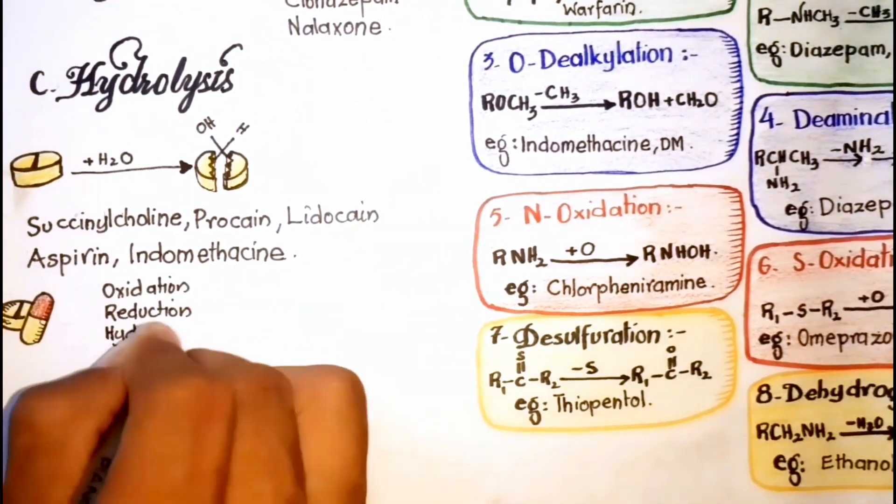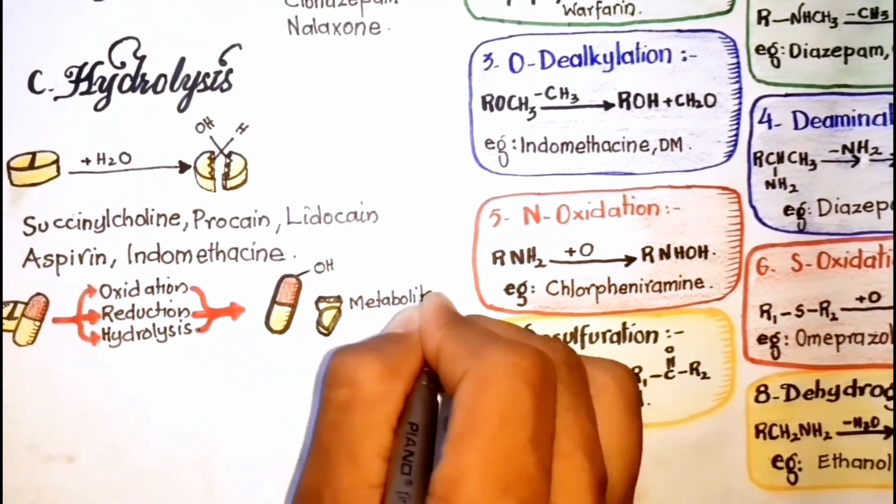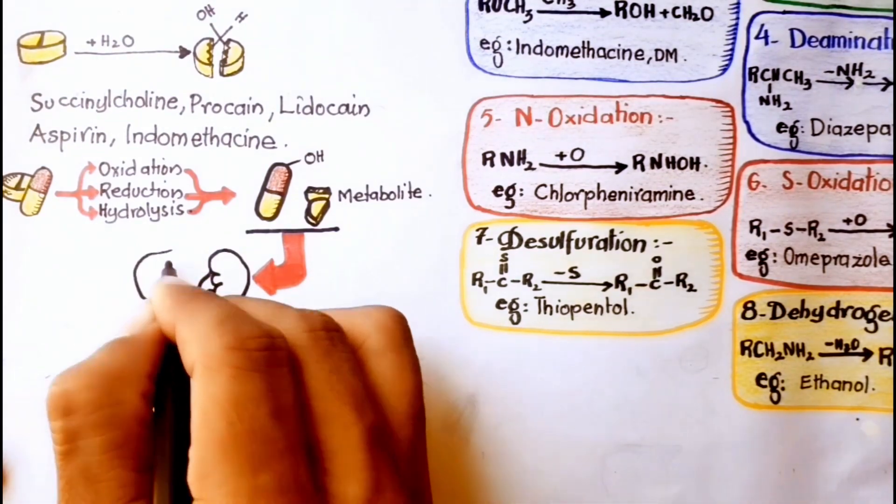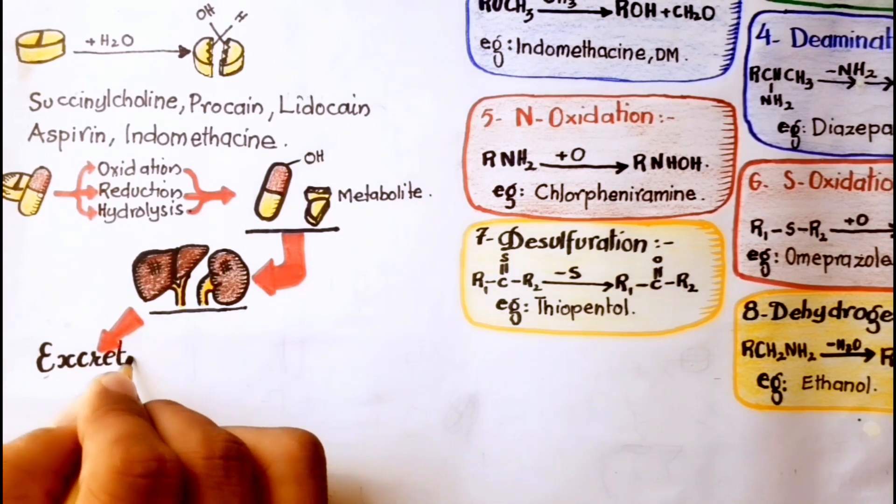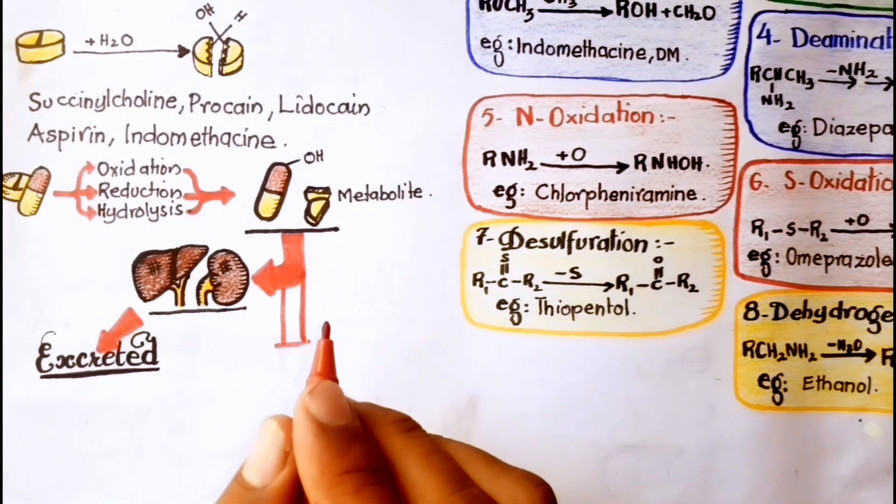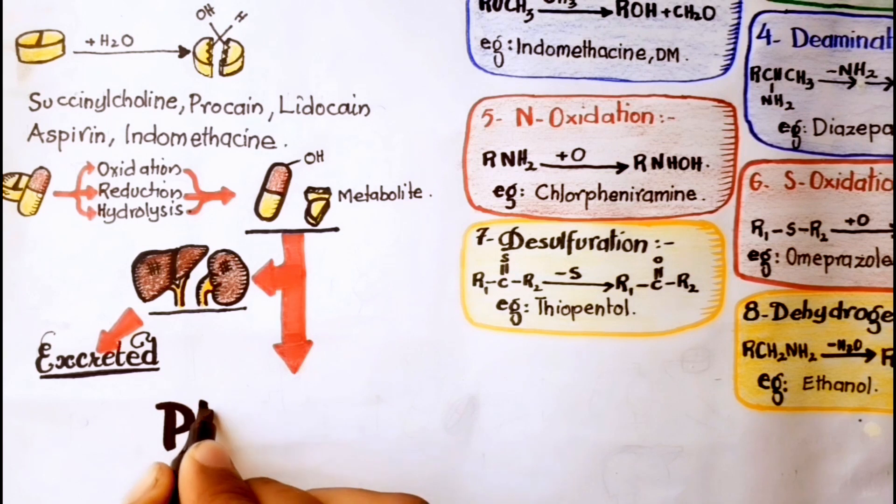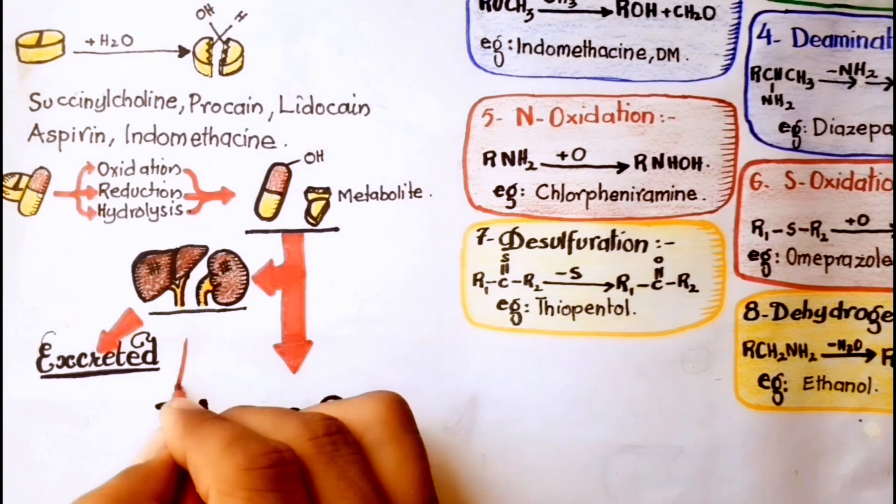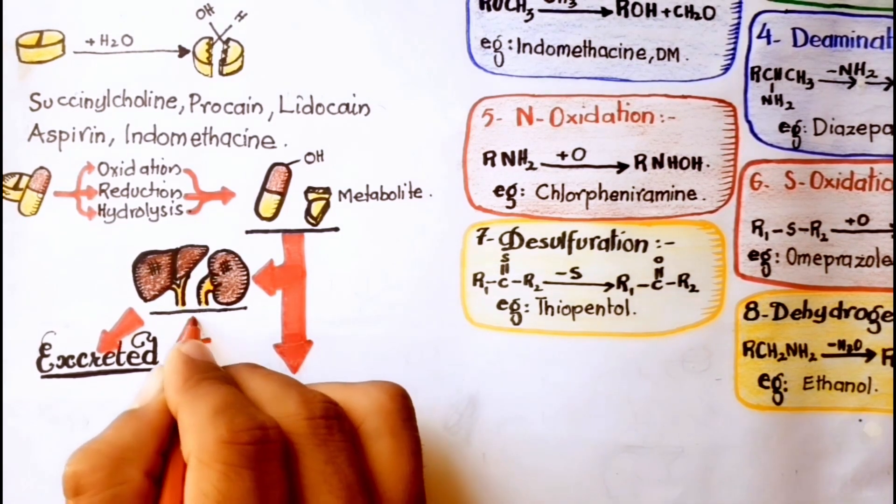Besides this, a drug can undergo more than one type of reaction. In addition, if the metabolite from phase 1 metabolism is sufficiently polar, it can be excreted. However, many phase 1 metabolites are still too lipophilic to be excreted. A subsequent phase 2 metabolism results in polar, usually more water-soluble drug metabolites to be excreted easily.